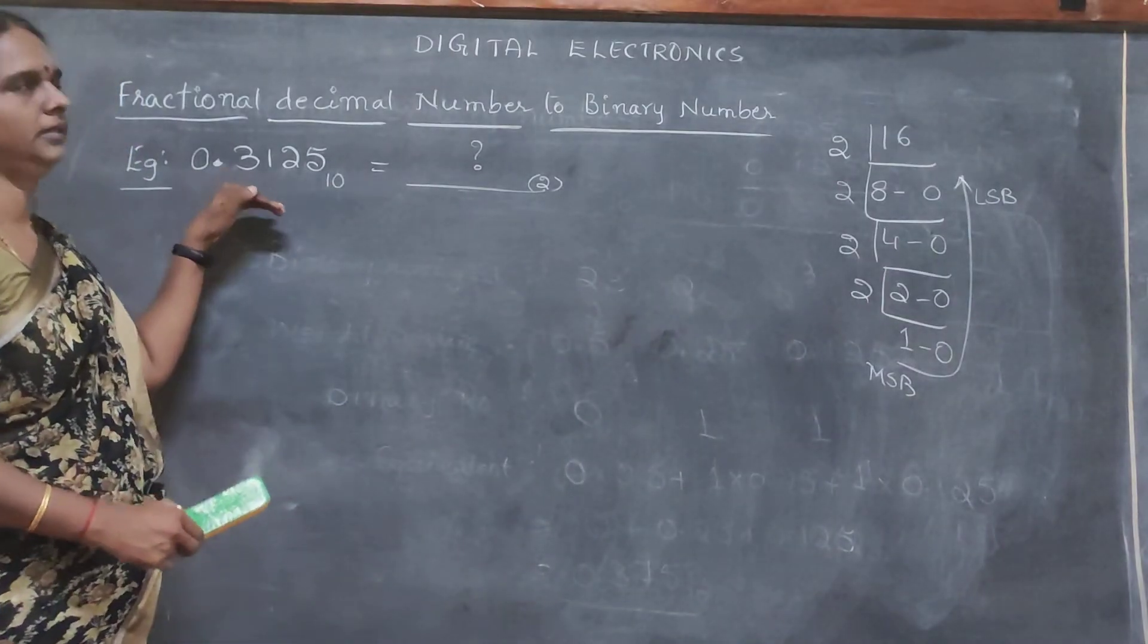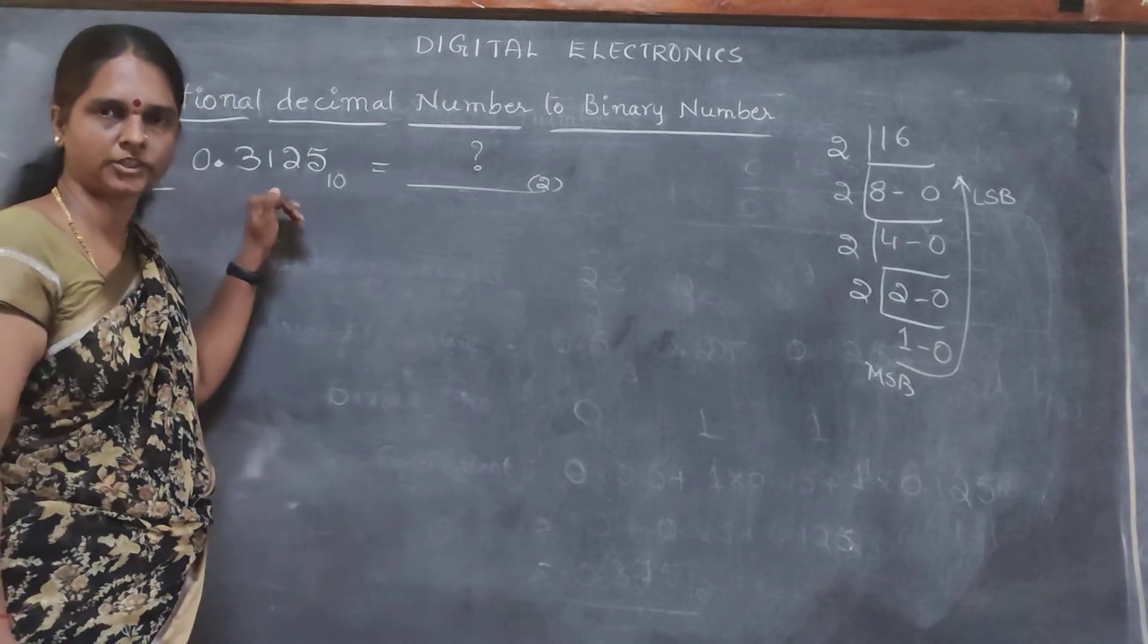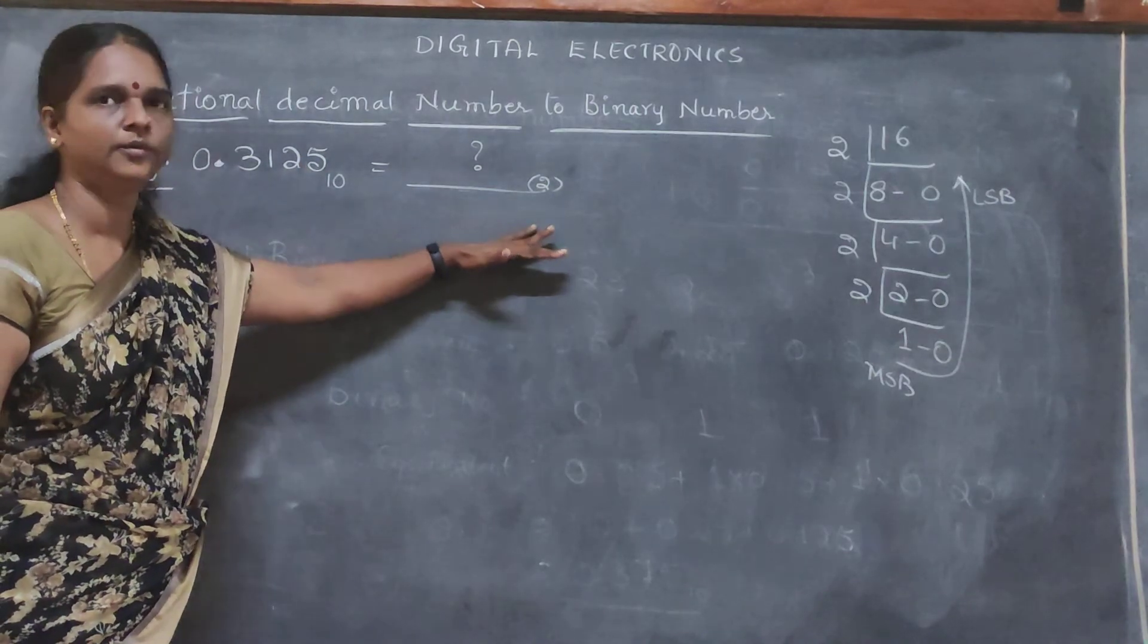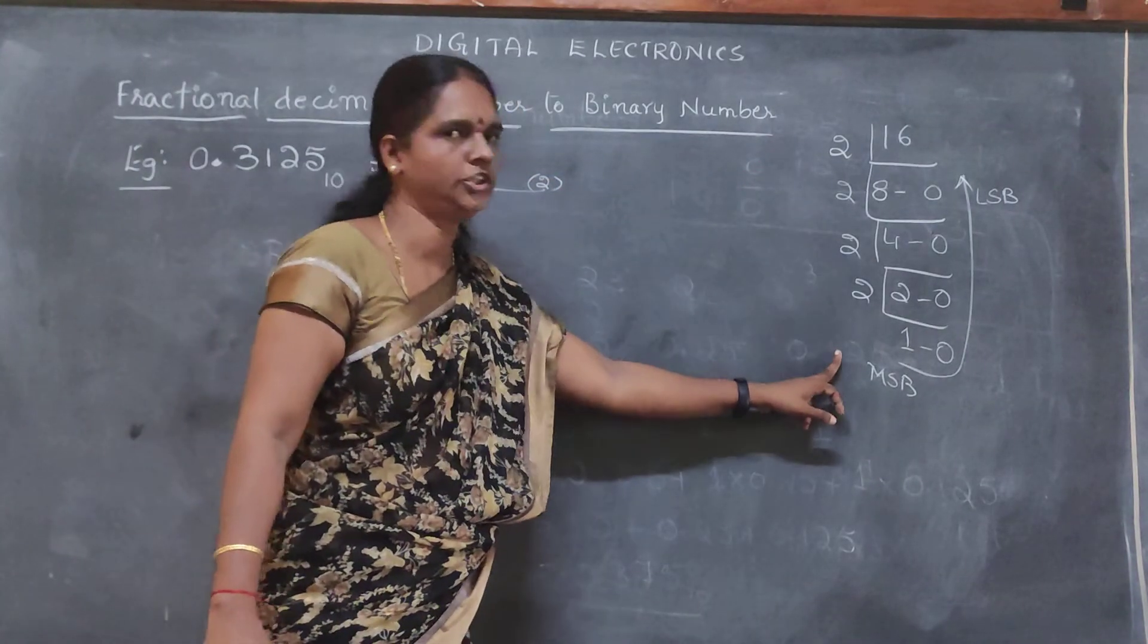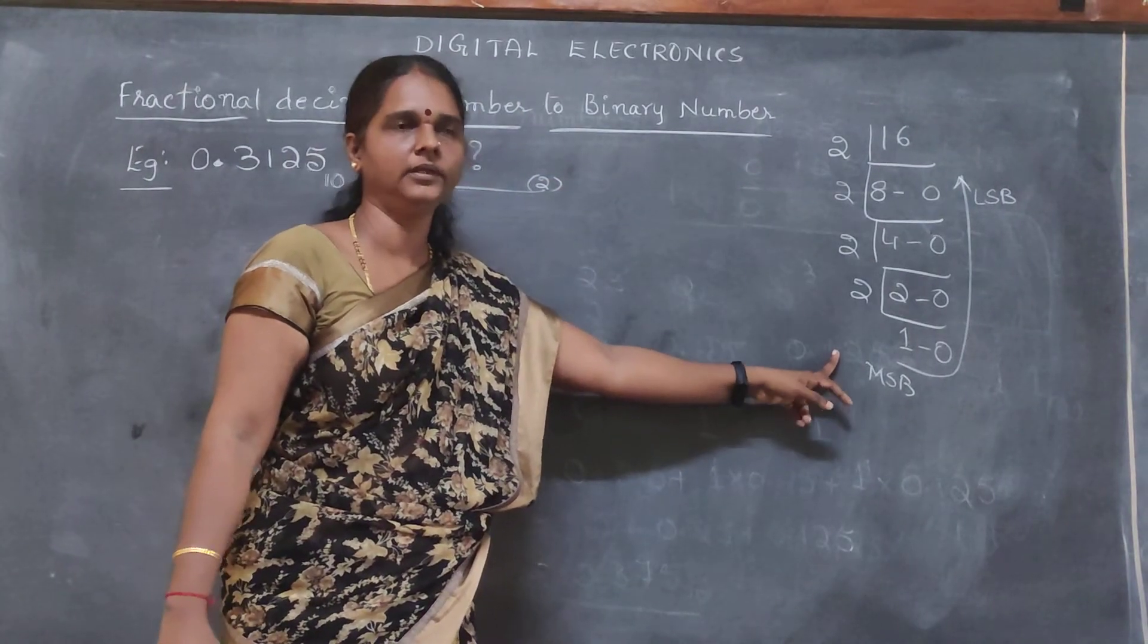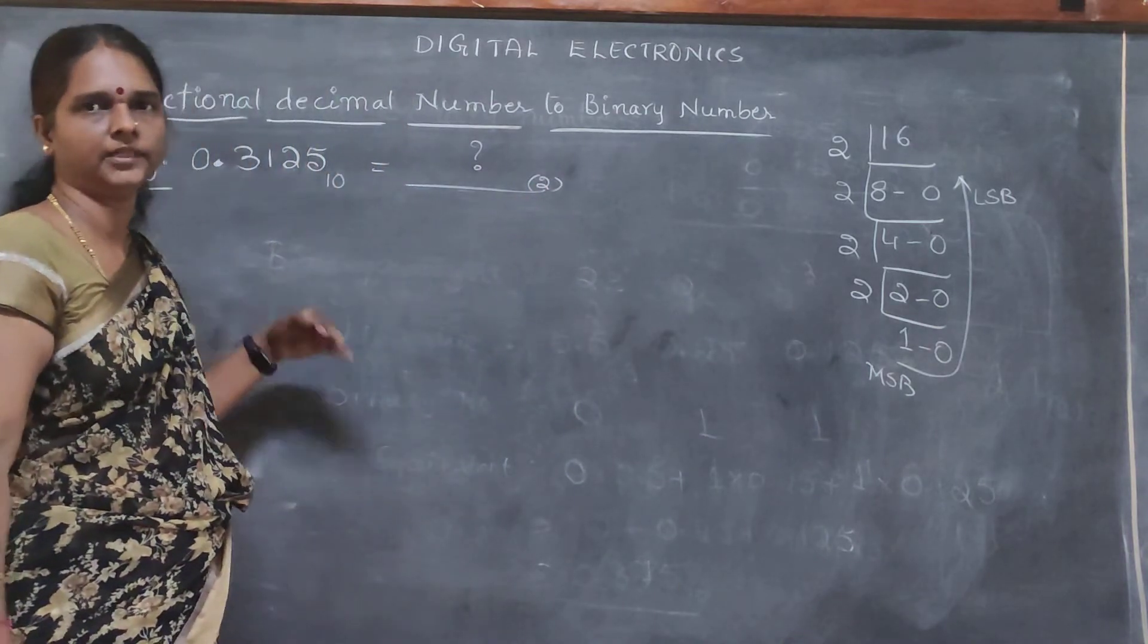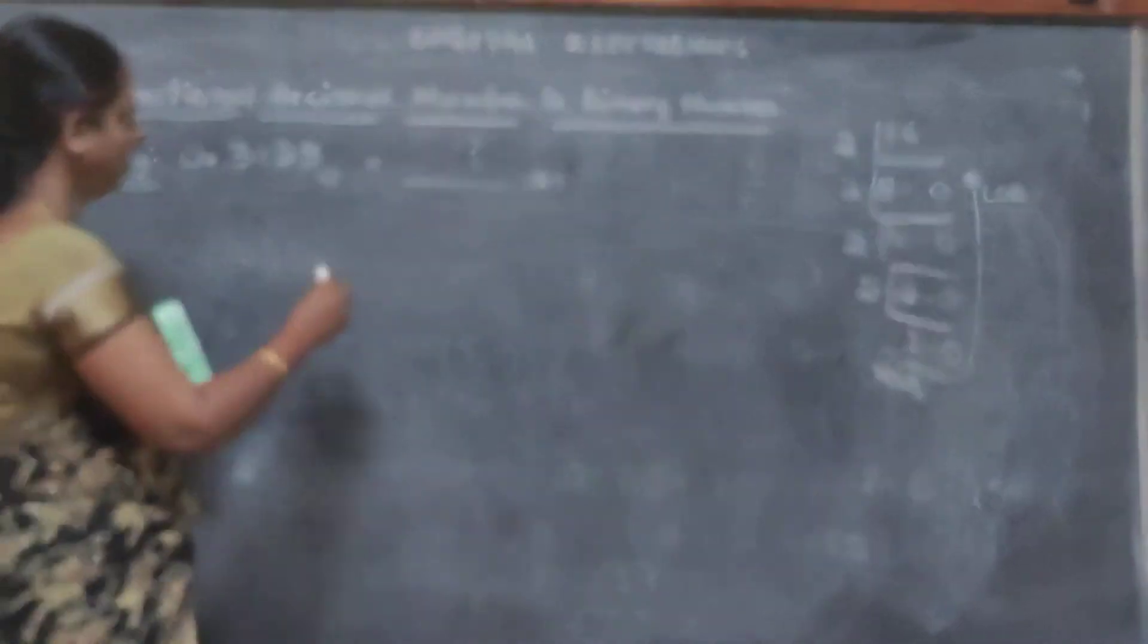Now, here to convert this fractional decimal number to fractional binary number, instead of this repeated division by 2 method, we do repeated multiplication by 2.